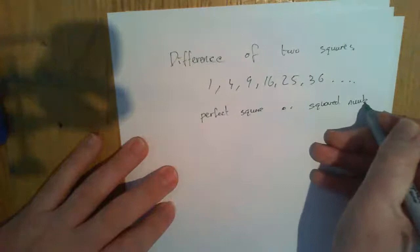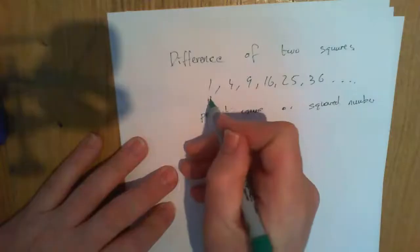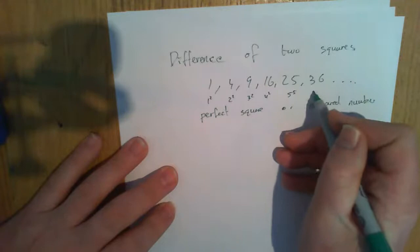What that means is that another integer has been squared to give you that number. For example, 1 squared, 2 squared, 3 squared, 4 squared, 5 squared, 6 squared.